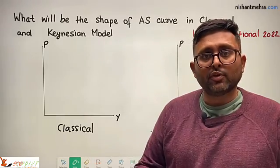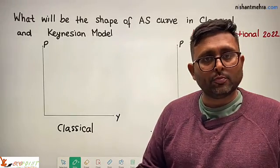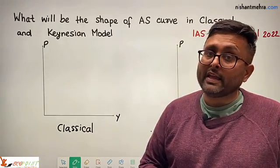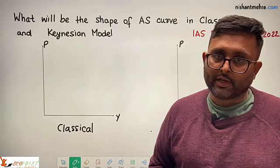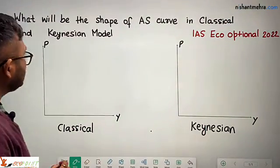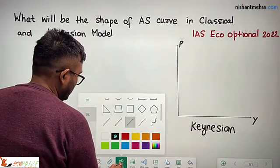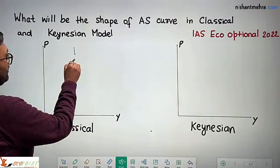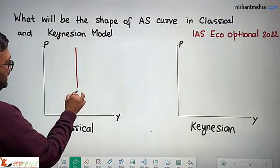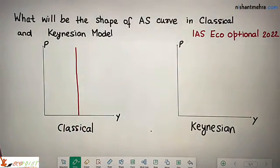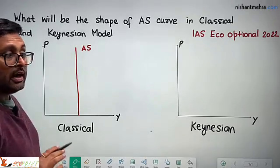Because entire labour is fully employed and all inputs are fully employed, there is no way to increase output. Because of the high economy-wide demand, the only result is that prices are going to increase. So in the classical model, the aggregate supply curve is vertical.